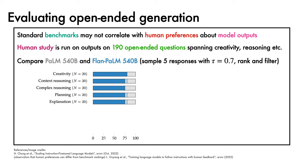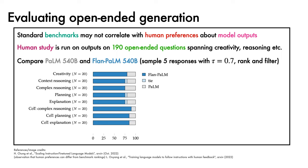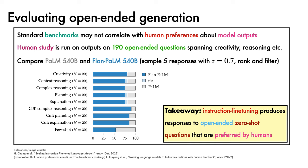For zero-shot questions, dark blue indicates that human labellers prefer the outputs of Flan-PaLM, light blue is where the two models were tied, and grey indicates that the outputs of PaLM were preferred. Overall, Flan-PaLM is strongly preferred. When considering zero-shot chain-of-thought prompts, this trend is even more evident. Finally, in the few-shot setting, model outputs are roughly ranked equally. The takeaway here is that instruction fine-tuning leads to model responses to open-ended zero-shot questions that are preferred by humans.